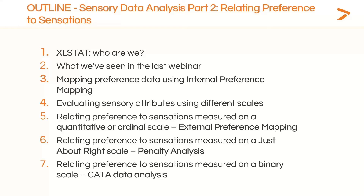Here's an outline of the webinar today. I'll first start with a few words on XLSTAT. Then I'll do a small reminder about what we've seen in the last webinar. Then I will show you one way of mapping preference data without reference to sensory attributes using a technique called internal preference mapping. After that, we'll see three different methods which allow relating preference to sensory attributes: external preference mapping, penalty analysis, and CATA data analysis. One of the main differences between these three methods is the way the sensory attributes are measured — what scale we use.